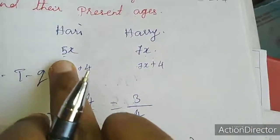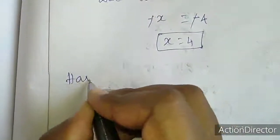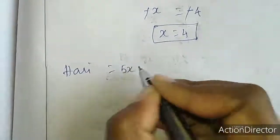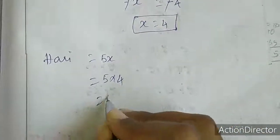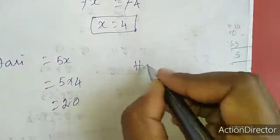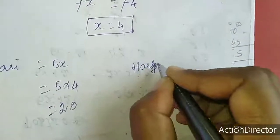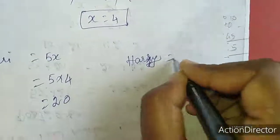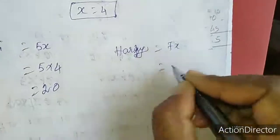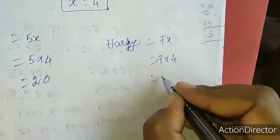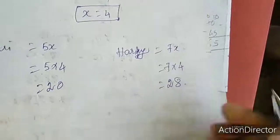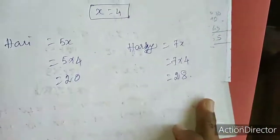But we need the present ages. Hari's age is 5x equal to 5 into 4, that is 20. Hari's age is 7x equal to 7 into 4, that is 28. So their present ages are 20 and 28.